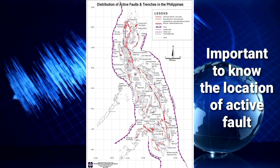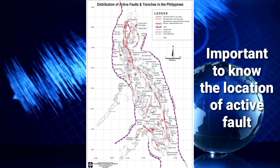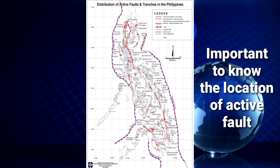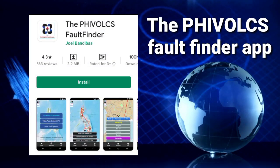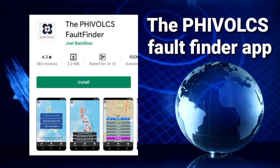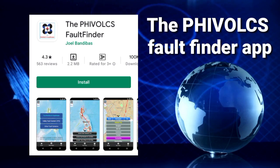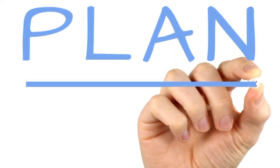It is important to know the location of active faults. As much as possible, no important structure should be built near them. PHIVOLCS has a map that shows the active faults in the Philippines, and they also have apps that can be installed on our cellular phones. The best thing to do is to plan ahead — anticipating the worst to come up with the best solution to an unexpected undesirable event such as a calamity or disaster.